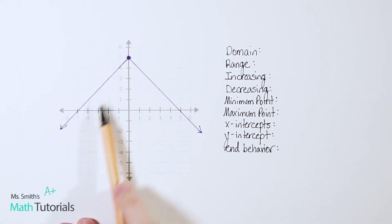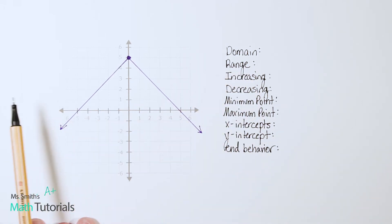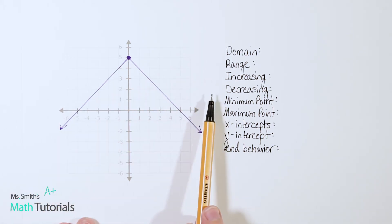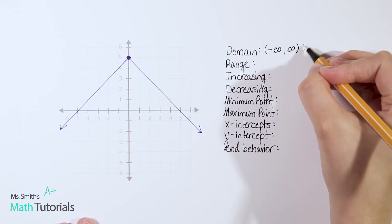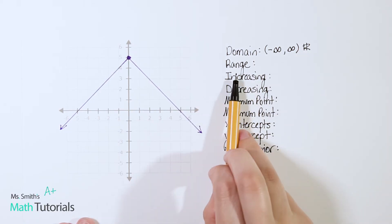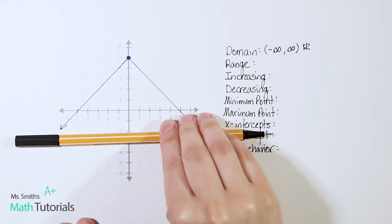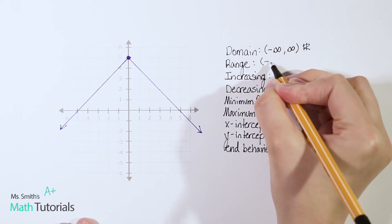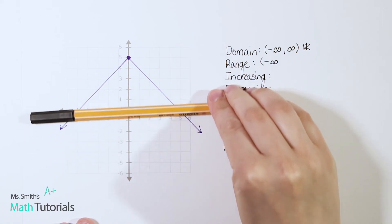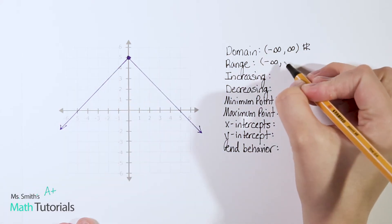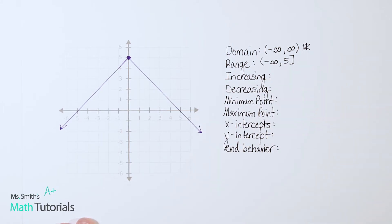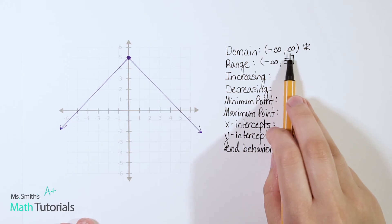Looking at this graph — this is actually an absolute value graph. For our domain, remember domain is left to right: negative infinity to positive infinity. You can write that as double-line R. For range, remember bottom to top. The first thing I hit is arrows, which indicate negative infinity at the bottom. The last thing I hit is a solid point, which gets a bracket, and it falls at positive five. Range is talking about y, so the range is negative infinity to positive five with a bracket. We could not write all real numbers here — that's only when you have the double infinity.